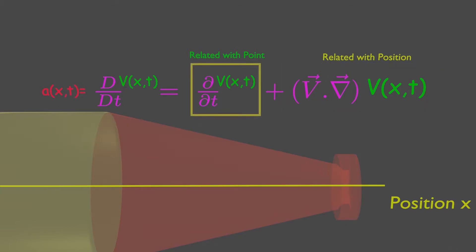This first term will be zero if there exists steady flow, and steady flow is related with point. Whereas the second term will be zero if it has uniform flow, and uniform flow is related with location.